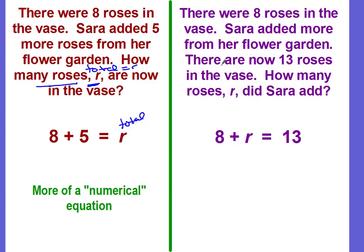This time we know the total. There are now 13 roses. This is our total, our equals amount, 13. It equals 13. Well, what equals 13? The eight roses she had, plus the additional amount that she added.